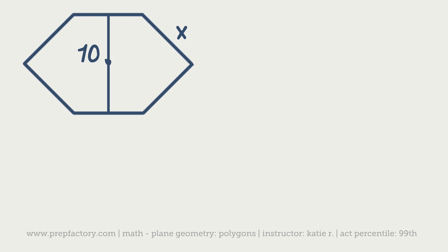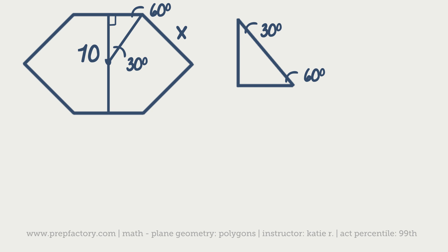Let's look at a regular hexagon problem. Say we know it's a regular hexagon, we're looking for x — any one of the sides — and the line drawn through the center has a length of 10. To find a side of the hexagon, make a right triangle. This is a 30-60-90 triangle: we know the angle is 90 because those two lines are perpendicular, and in a regular hexagon all angles are 60 degrees, so our outer angle is 60 degrees.